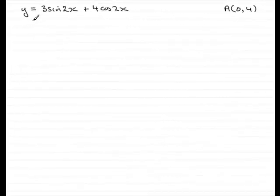Okay, so in this part of the question, we've got to find the equation of the normal to the curve at this point A, 0, 4.